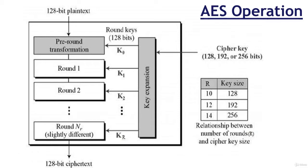Unlike DES, the number of rounds in AES is variable and depends on the length of the key. AES uses 10 rounds for 128-bit keys, 12 rounds for 192-bit keys, and 14 rounds for 256-bit keys. Each of these rounds uses a different 128-bit round key, which is calculated from the original AES key. The schematic of AES structure is given in the following illustration.